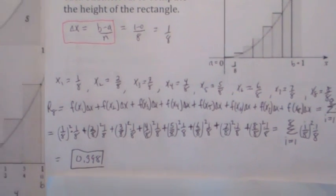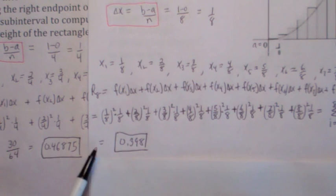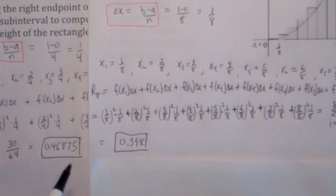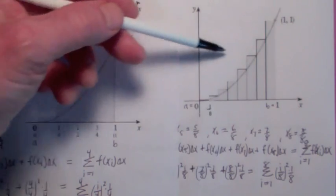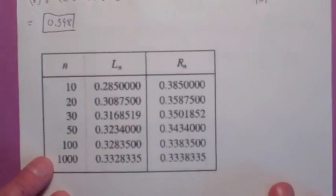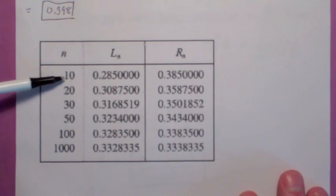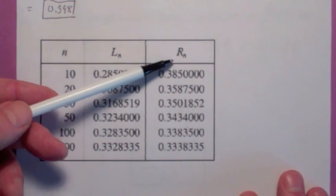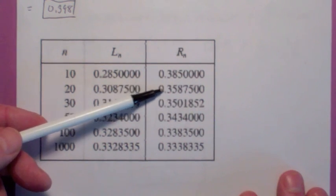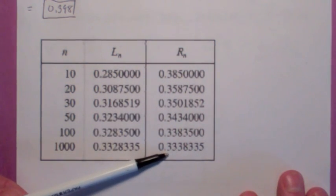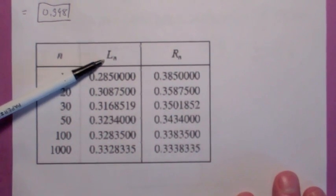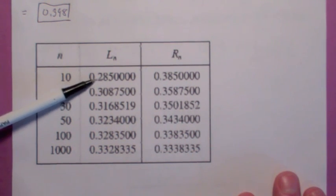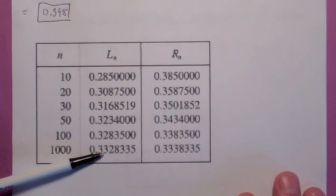Are you surprised that that sum is actually quite a bit less than the first one? When you only had four rectangles, there's a lot more error. This chart really says a lot. As you increase the number of rectangles with right rectangles, notice how the sum of the areas becomes less. In fact, it looks like it's getting close to 1 third as n gets large. If we were to use left rectangles instead, the sum of areas is going to be less, but notice it's still approaching 1 third.